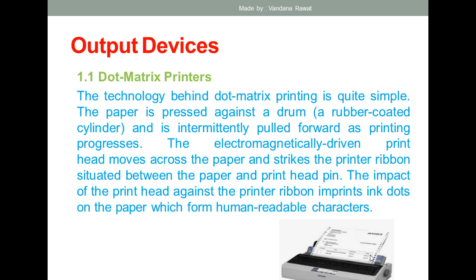The impact of the print head against the printer ribbon imprints ink dots one by one, forming human-readable characters. In a dot matrix printer, all characters are printed one by one in this manner. This type of impact printer is generally used in labs, and you can see these kinds of printers being used in various laboratory settings.